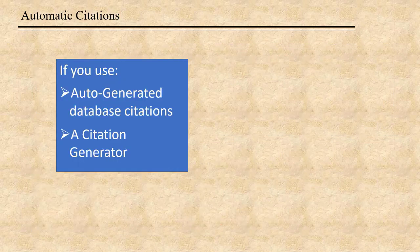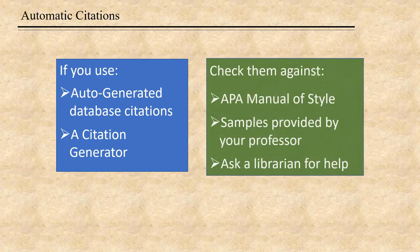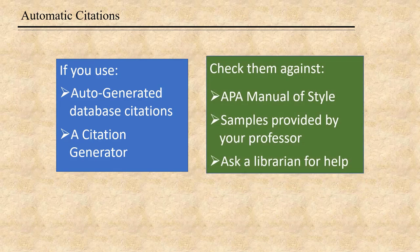If you use auto-generated database citations — and yes, the library databases will format citations for you, and they do a pretty good job — or an online citation generator, make sure you check those citations against a reputable source to make sure they're correct before turning your paper in. After all, those people aren't getting a grade for those citations, but you are.